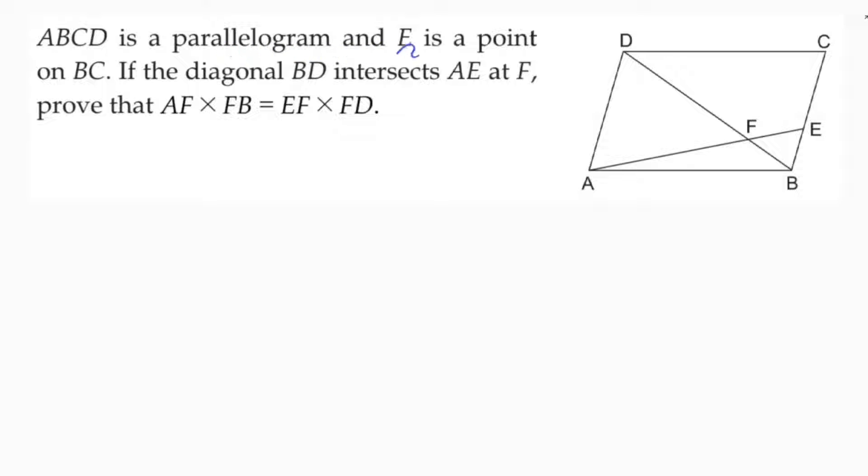ABCD is a parallelogram and E is a point on BC. If the diagonal BD intersects AE at F, we need to prove that AF by FB equals EF by FD. So it's clear here we need to prove that these two triangles are similar.